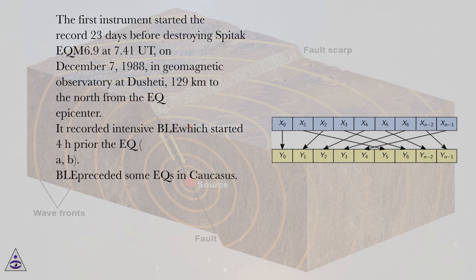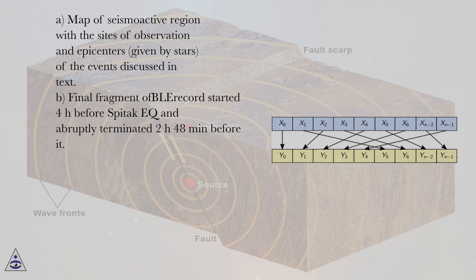It recorded intensive BLE which started four hours prior the EQ. BLE preceded some EQs in Caucasus. Map of seismoactive region with the sites of observation and epicenters, given by stars, of the events discussed in text.